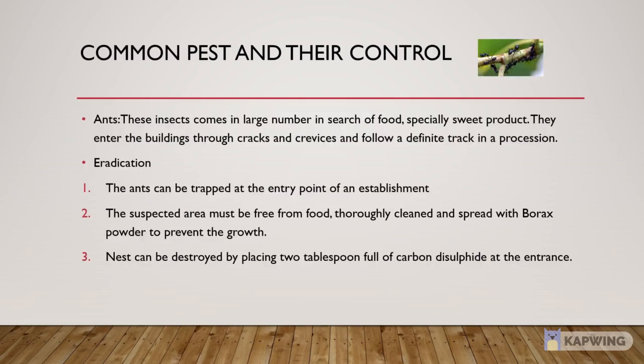The next common pest is Ants. These insects come in large numbers in search of food, especially sweet substances. They enter the building through cracks and crevices and follow a definite trail in a procession. Control methods: 1. Ants can be trapped at the entry point. 2. The suspected area must be free from food, thoroughly cleaned and spread with borax powder to prevent growth. 3. Nests can be destroyed by placing two tablespoons of carbon disulfide at the entrance point.